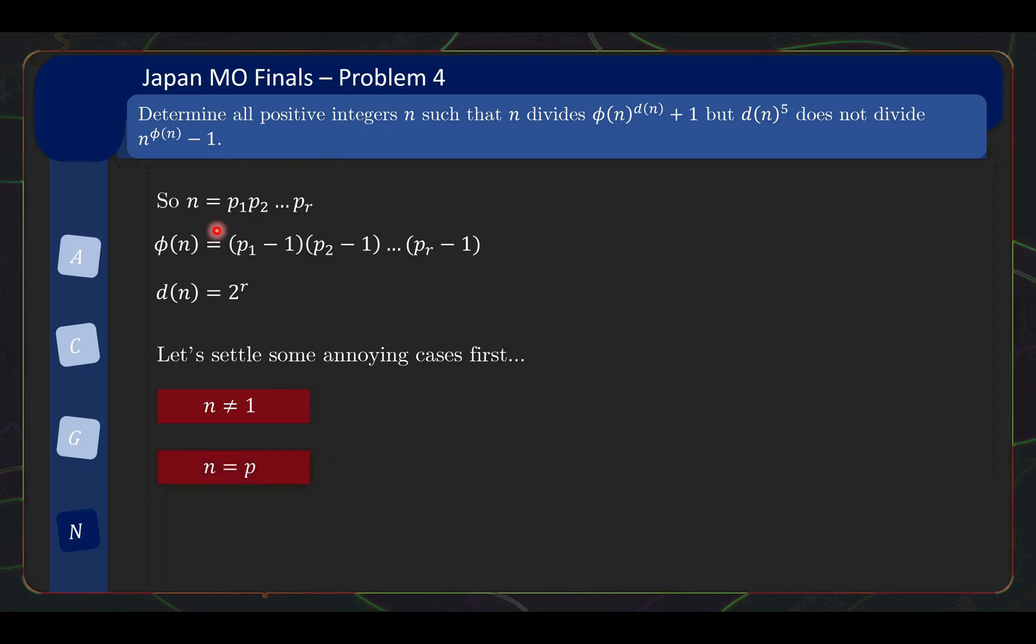But the other case that we also want to check is, what if n is just equal to a prime itself? It's not so clear why you want to check this case separately, but it will become clearer in the next slide. So just bear with it, let's check n equals to p separately. If that's the case, you can directly work out that φ(n) is p - 1, and d(n) is 2. So the first condition says that p divides (p-1)² + 1. This means (-1)² + 1 is congruent to 0 mod p, 2 is congruent to 0 mod p, so p is equal to 2. So the first condition forces p equals 2, but does it satisfy the second condition? This one can be directly checked. You just check, oh, 2^5 indeed does not divide 2^1 - 1. So indeed, n equals 2 is a solution.